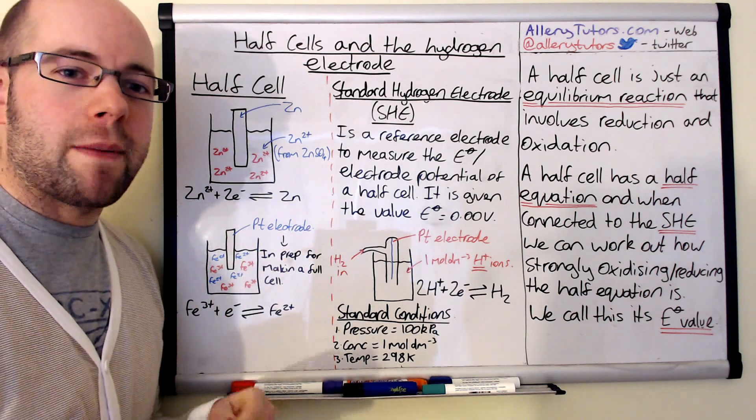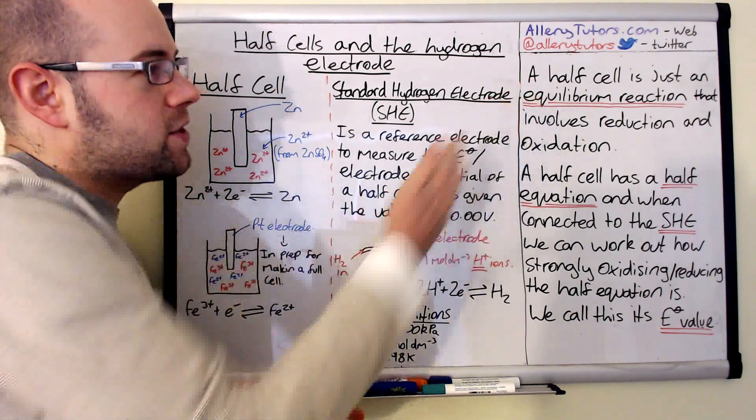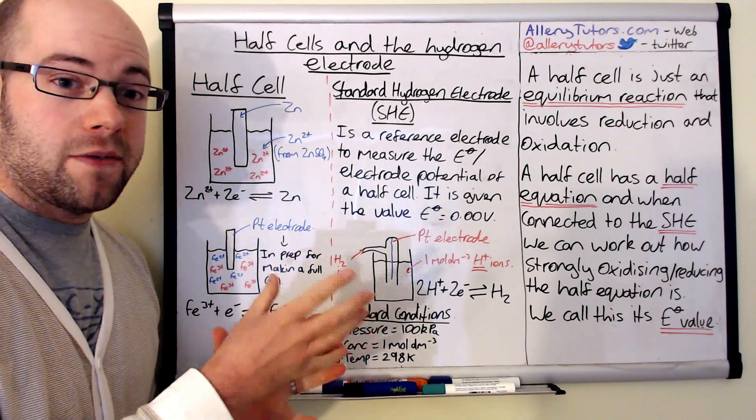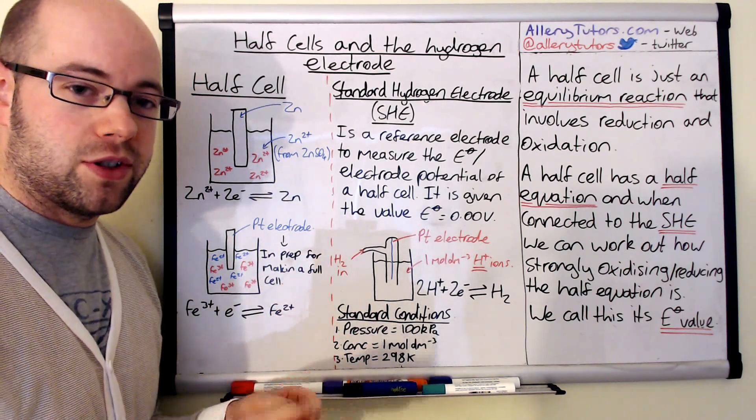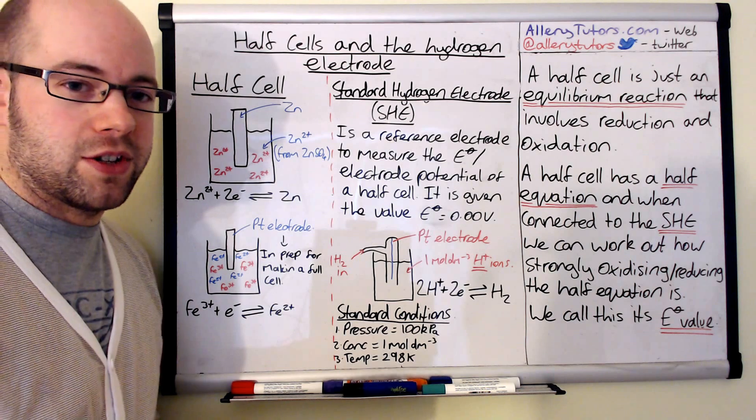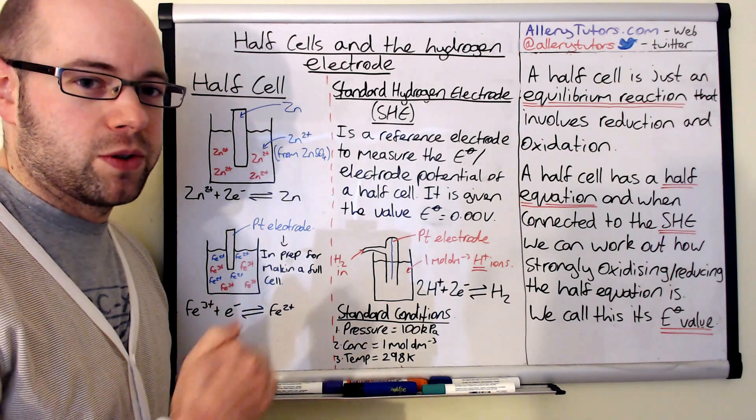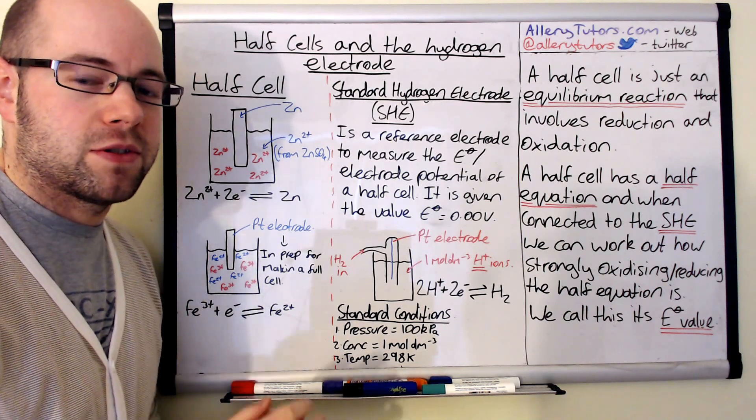So we're going to start with describing what a half cell is. A half cell is just an equilibrium reaction and it's actually a half equation. It shows reduction and oxidation and because it's in equilibrium, it's a reversible reaction. When we get reduction, we also get oxidation in that reaction as well.